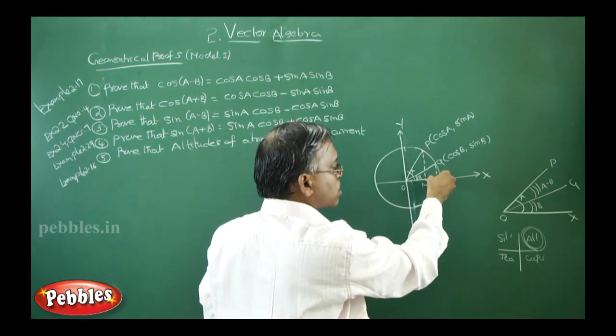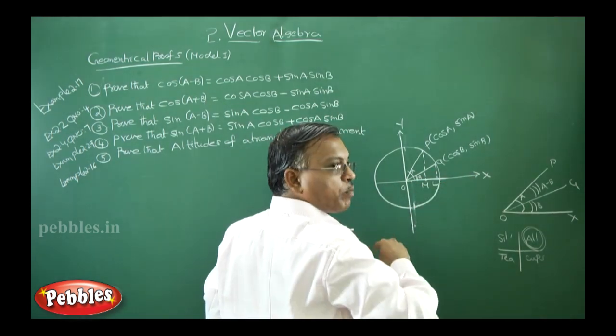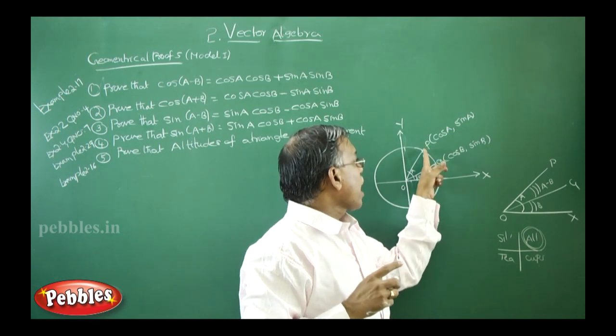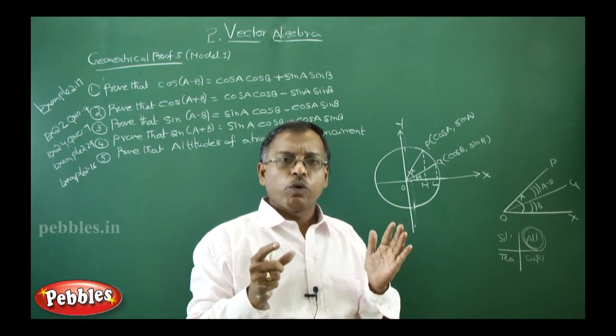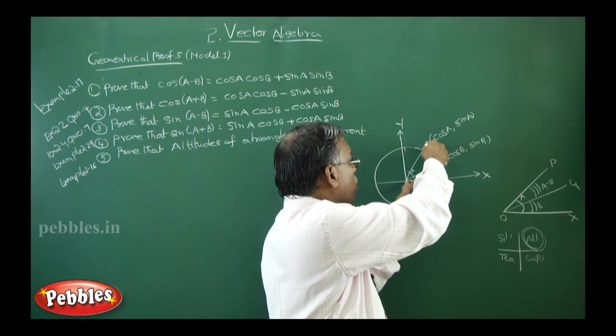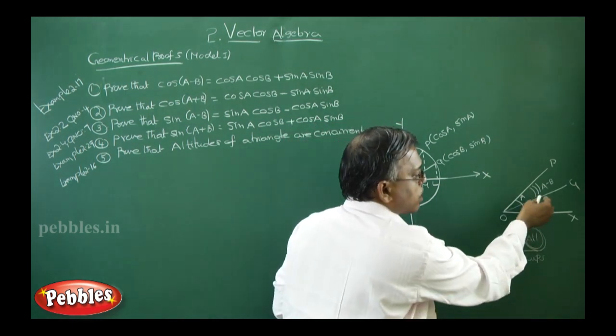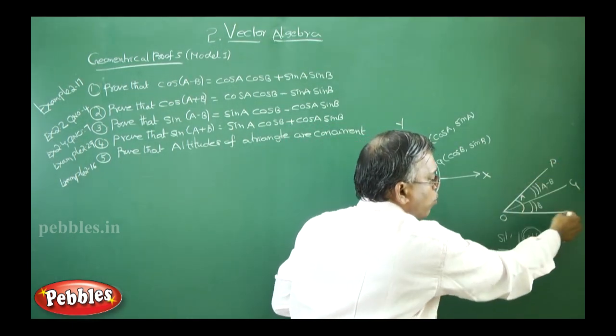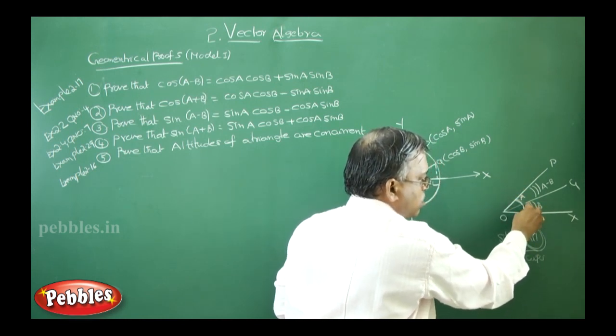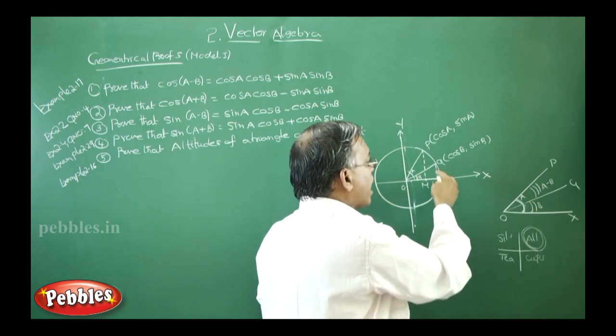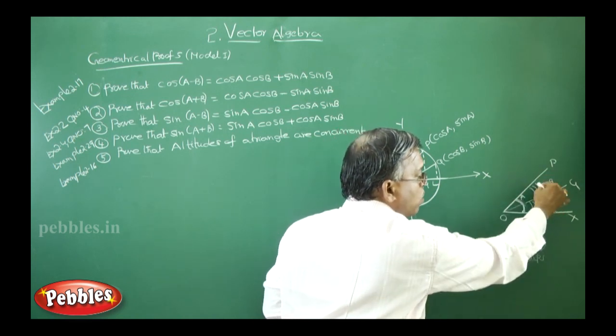Then you draw the perpendiculars from these two points. Let it meet on x-axis at two points, say M and L. And also, angle POX is A. That means, what is the meaning of angle POX? The angle made by OP with x-axis. That is the meaning of angle POX. Angle POX, see here. I saw a separate diagram here. POX, this is angle A. This is one line I draw like this. This is angle A.